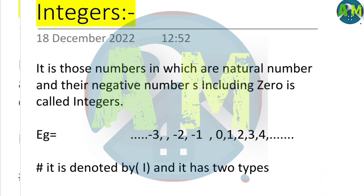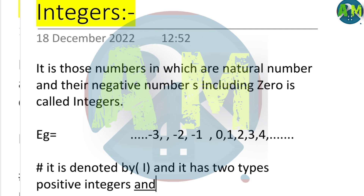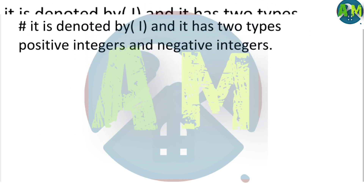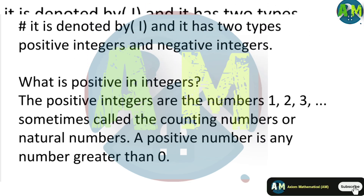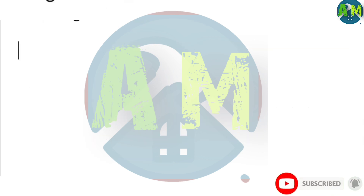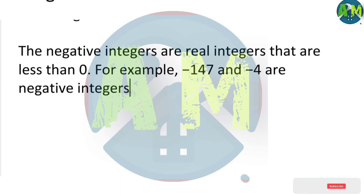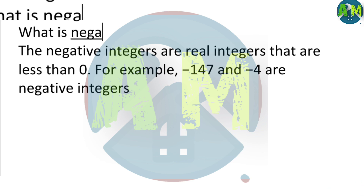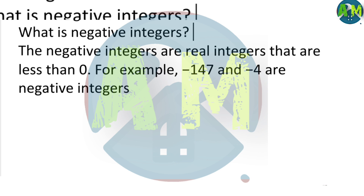There are two types: positive integers and negative integers. Positive integers are the numbers 1, 2, 3, and so on — sometimes called counting numbers or natural numbers. Any natural number greater than zero is a positive integer. Negative integers are those less than zero, for example: minus 47, minus 4, minus 3, and so on.